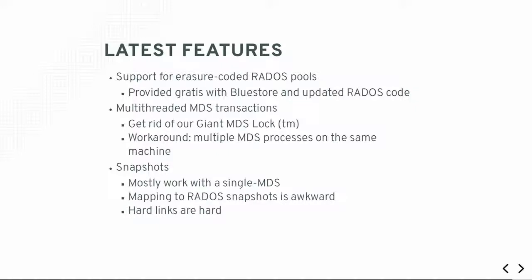We typically prefer to replicate data across the cluster to avoid data loss, but you can also use erasure coding instead of replication to save on storage, though often at a performance cost. The erasure coding algorithm is pluggable - we typically use Jerasure. So if you want to run something like RAID 6, which is 8+2, you get a 20% storage overhead for the ability to lose two devices - obviously much better than 3x storage overhead, though performance is lower. Erasure coding is now also supported with CephFS, where before it only worked on replicated pools.